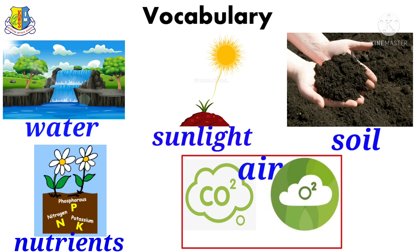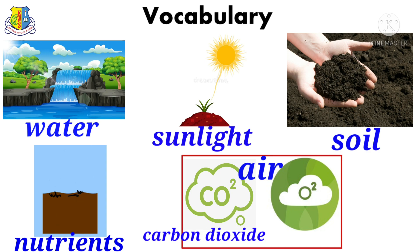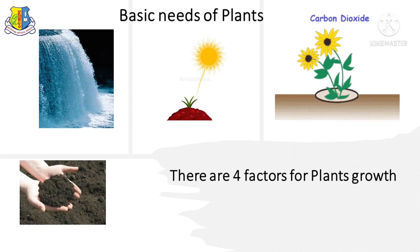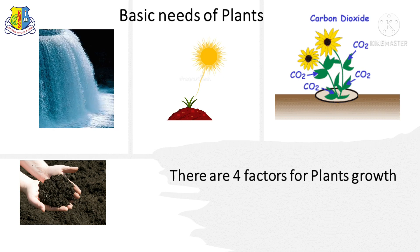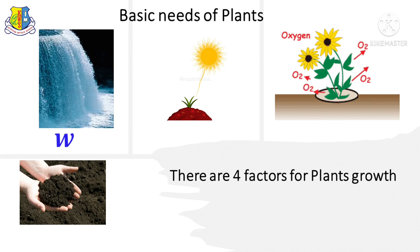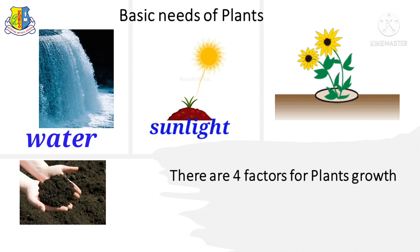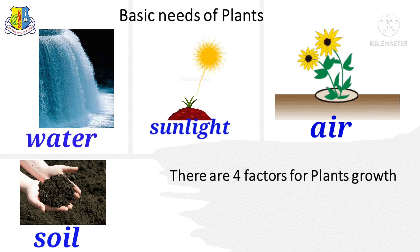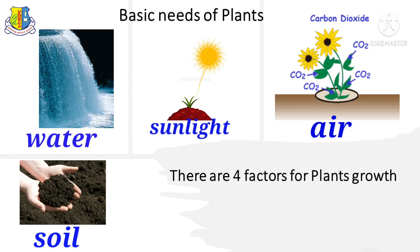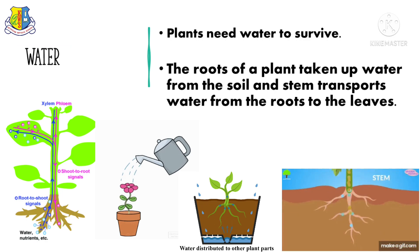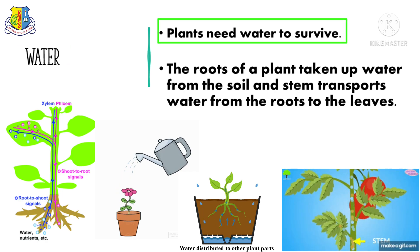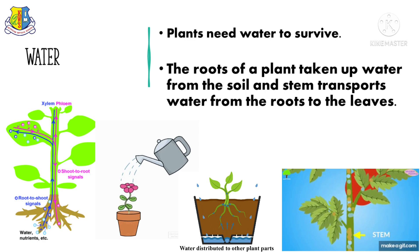There are four factors for plant growth and survival: water, sunlight, air, and soil. Now we will see more detail about these factors. Water — plants need water to survive. Look at these pictures.